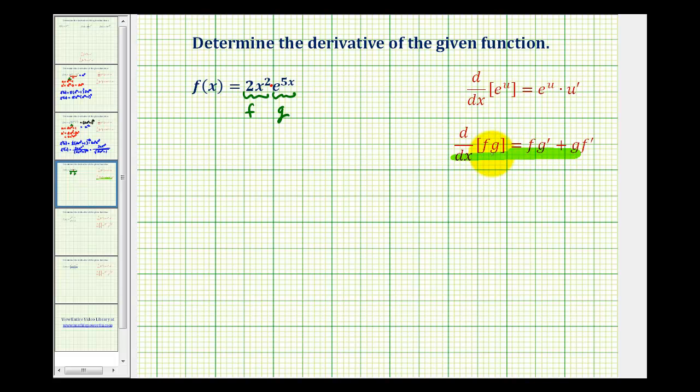And now we'll set up the product rule given here. So f prime of x is going to be equal to f times g prime plus g times f prime, or the first function, 2x squared,